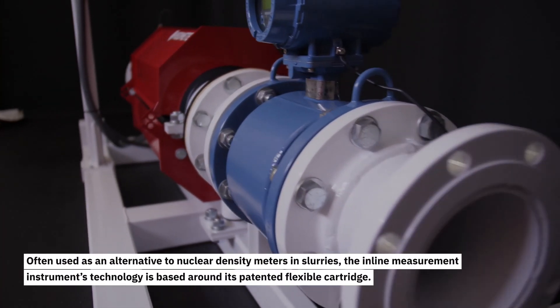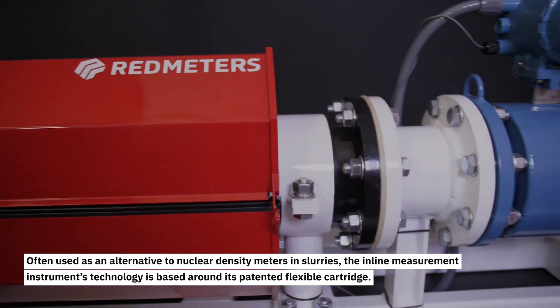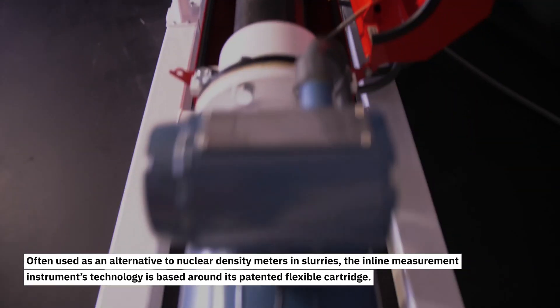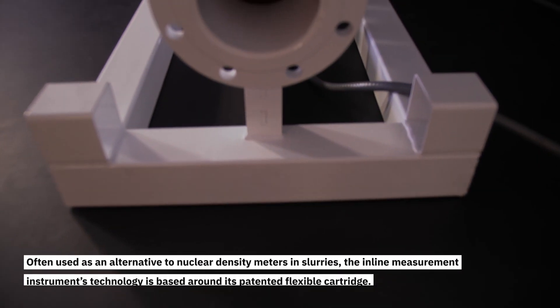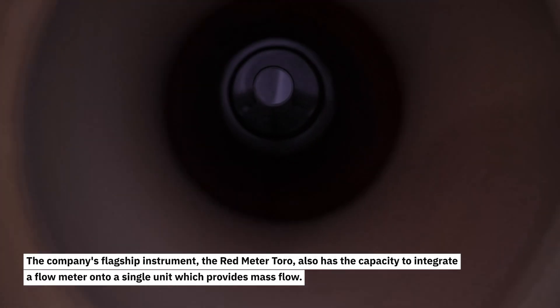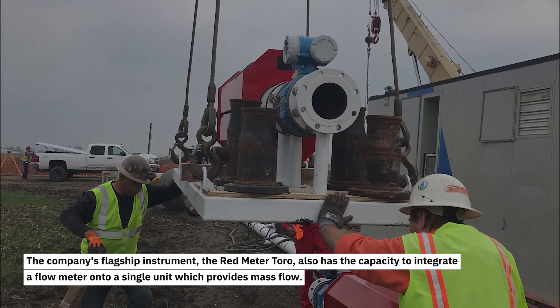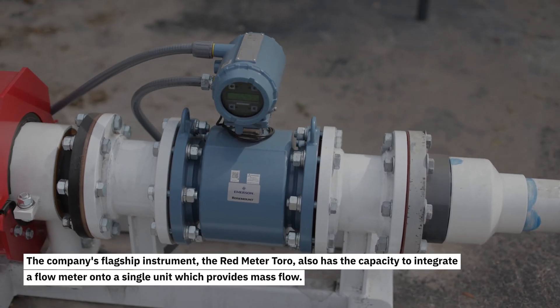Often used as an alternative to nuclear density meters in slurries, the in-line measurement instrument's technology is based around its patented flexible cartridge. The company's flagship instrument, the red meter Toro, also has the capacity to integrate a flow meter onto a single unit which provides mass flow.